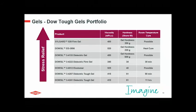Another group of gels we want to highlight are the tough gels. As you can see, they again have a very low viscosity. A quite unique property of most of these materials is the ability to build chemical bonding to substrates at room temperature. You can also see there are different cure schedules possible — different cure temperatures at which these materials cure.